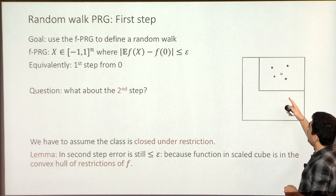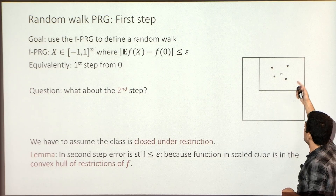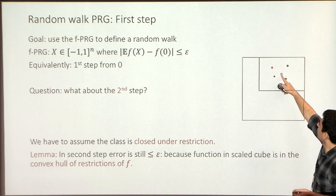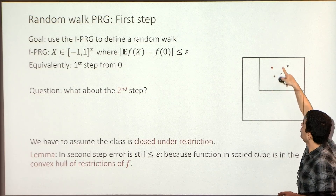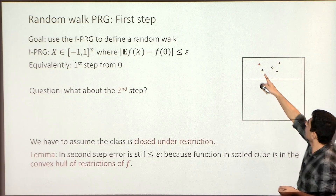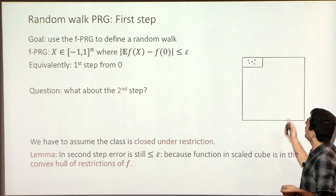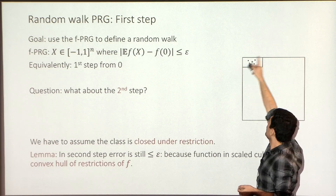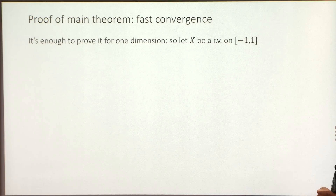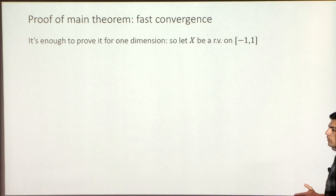Why does this converge fast to one of the vertices? Continue doing this: take a step, look at the cube with that point as center, take another step, and so on. The whole cube converges to one of the vertices. We want to say it should happen fast — not too many steps. Since every coordinate is independent, we just need to show fast convergence for one coordinate.